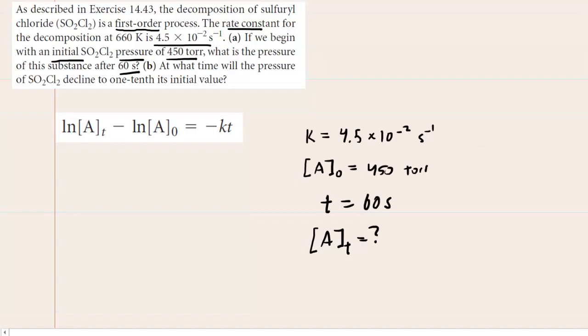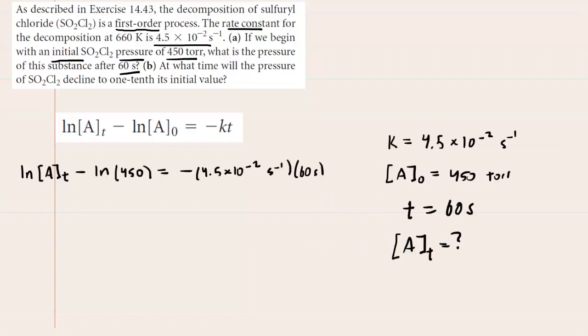So what we'll do is plug in all the known values into the equation. On the right-hand side, when we multiply the inverse seconds and the seconds, those units will cancel out.